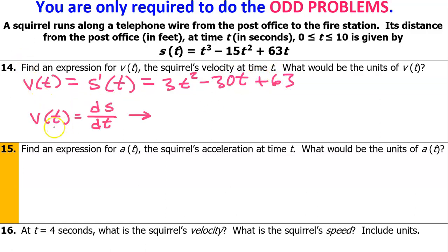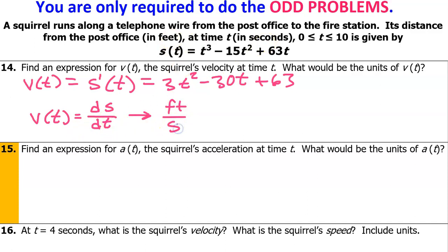What would be the units for this velocity? Since velocity is the derivative of position, we can think of it as the change in position divided by the change in time. Since position is being measured in feet, that means we've got feet in the numerator, and time is measured in seconds. So the units would be feet per second.